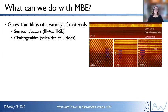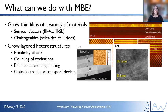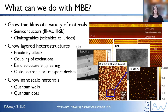So what can we do with MBE? We can grow thin films of a variety of materials. My group is primarily interested in semiconductors like 3-arsenide and 3-antimonide materials as well as van der Waals chalcogenide materials, primarily selenides and tellurides. We can grow layered heterostructures because we may be interested in proximity effects between two different materials, coupling of excitations, bandgap engineering, and to create optoelectronic or transport devices. We also do quite a bit of growth of nanoscale materials including quantum wells and quantum dots to understand how quantum confinement impacts our materials.